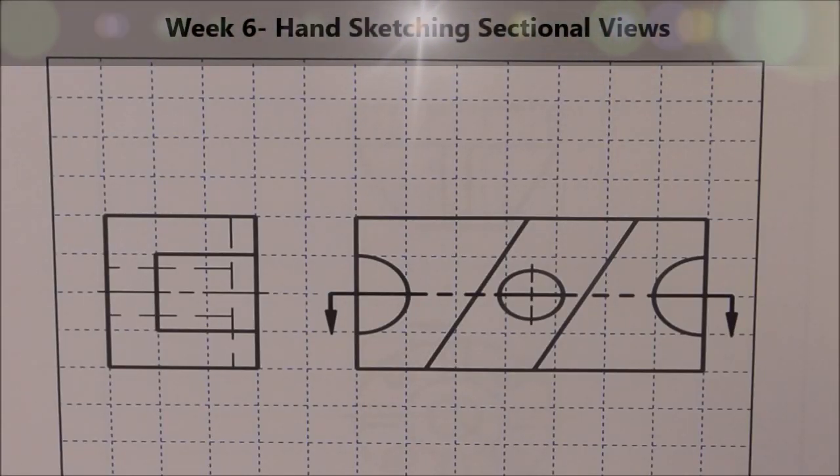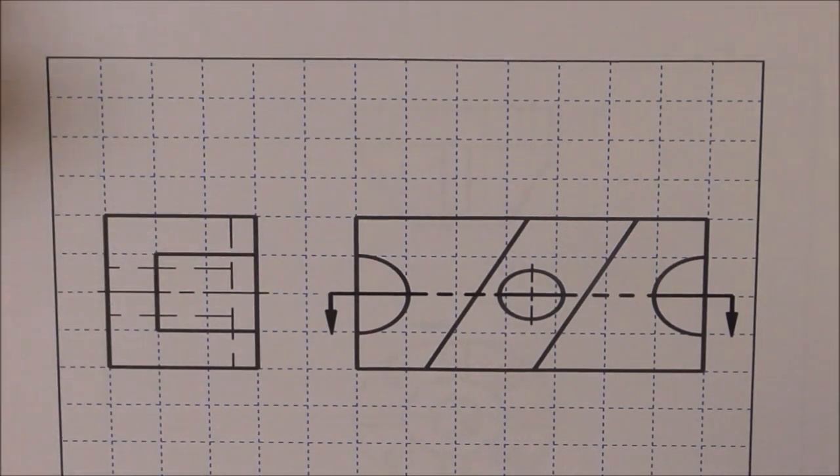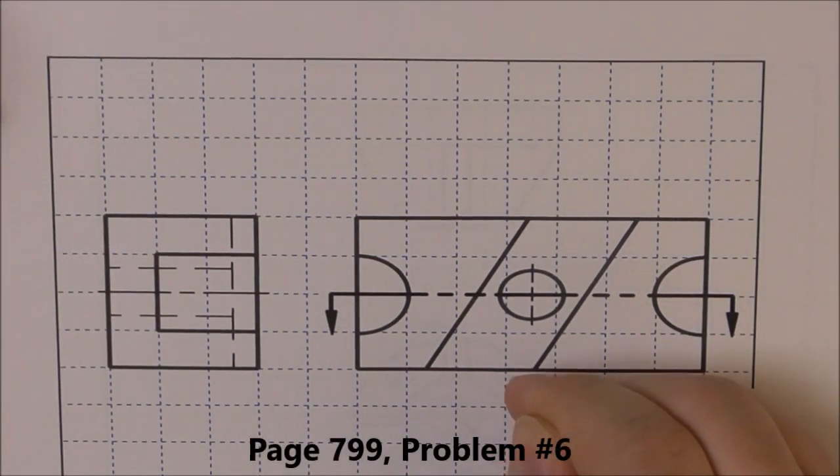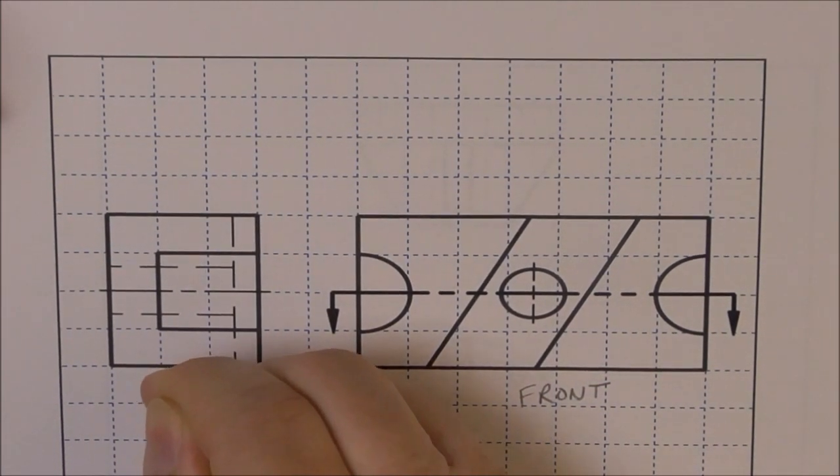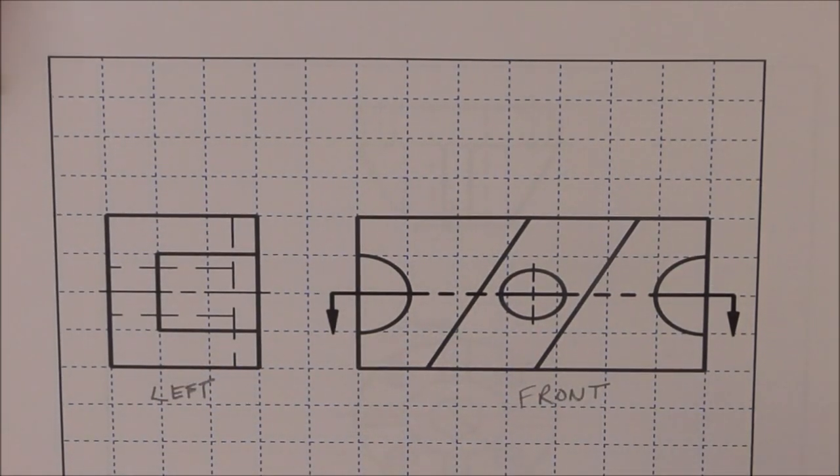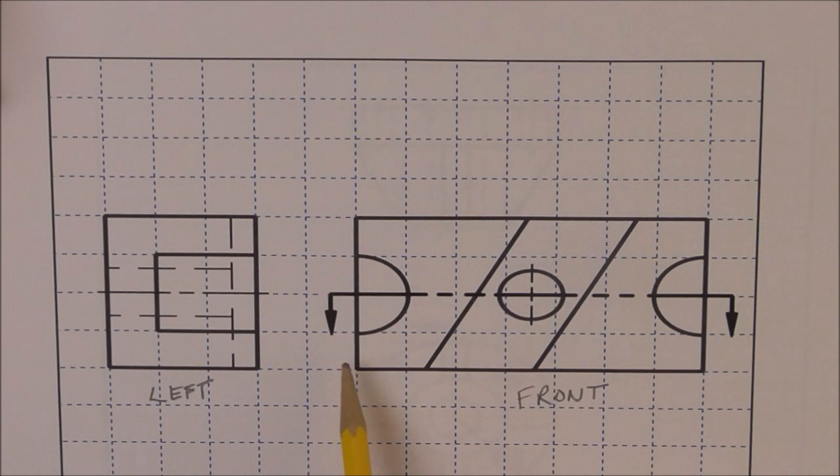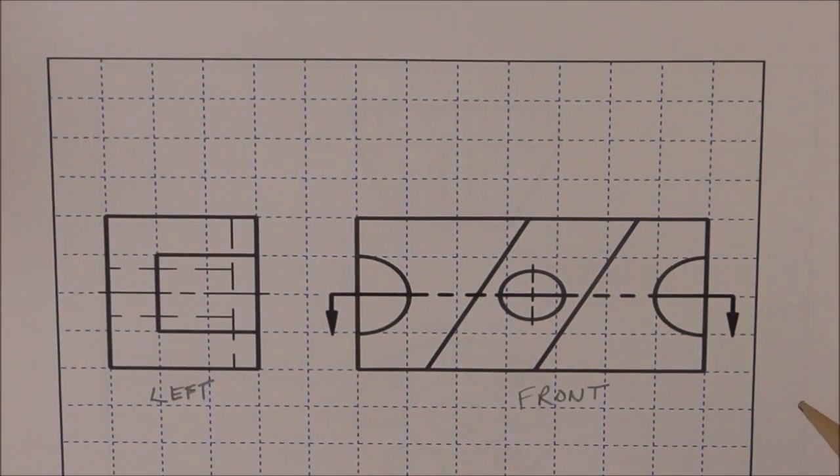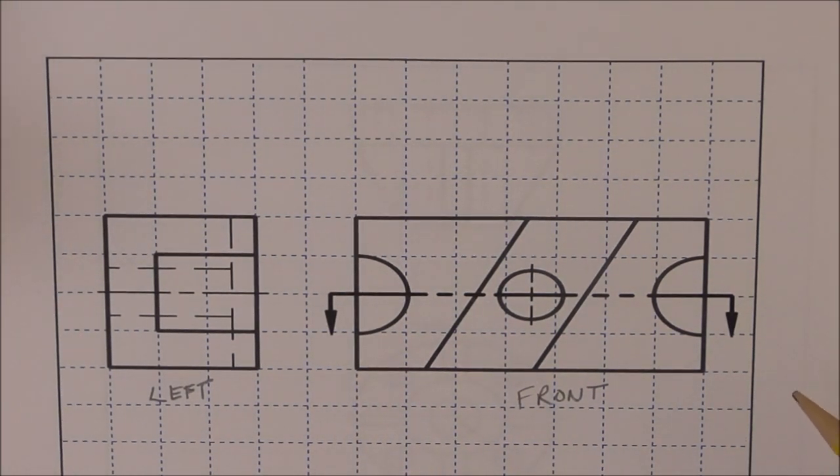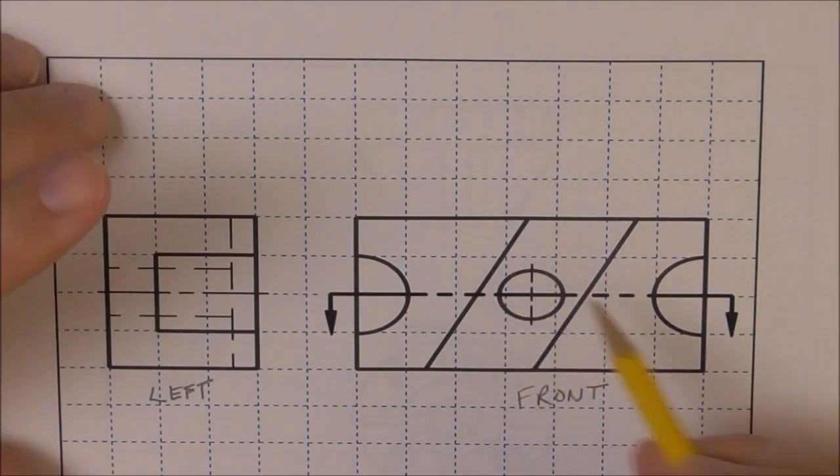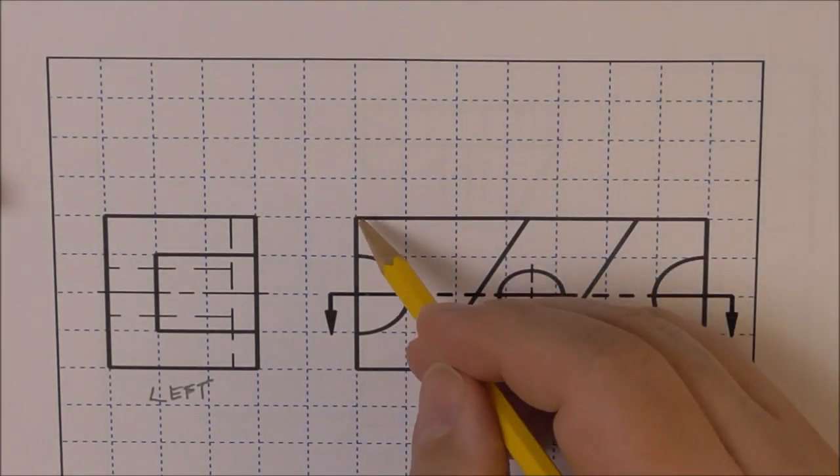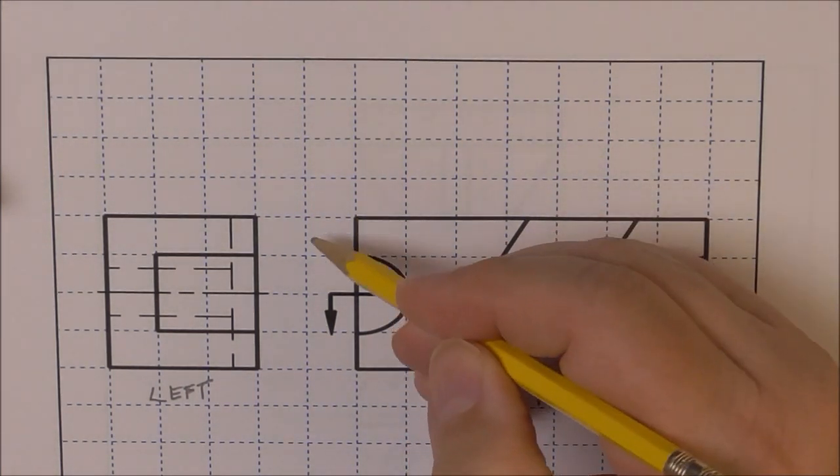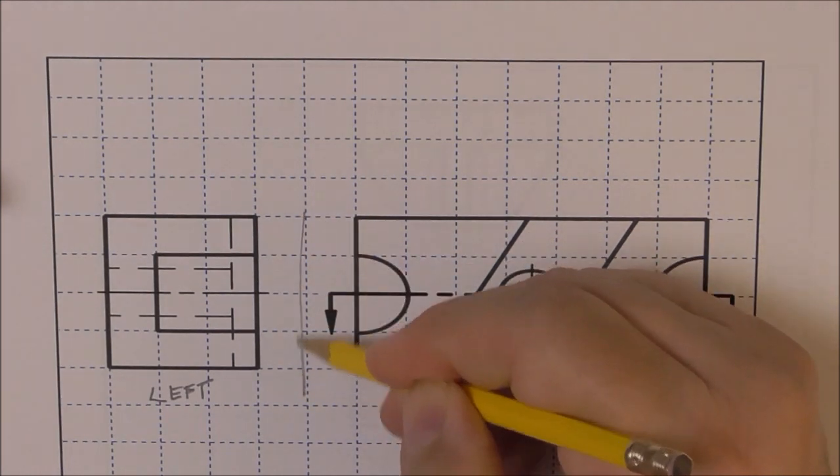Problem number six, week six, sectioning views. The book gives us two views, the front and left side. We need to solve for the section view. This thing is printed a little bit out of round, that should be a round circle, it's not round. Oh well, we'll just deal with it.